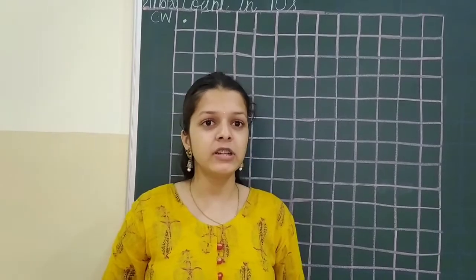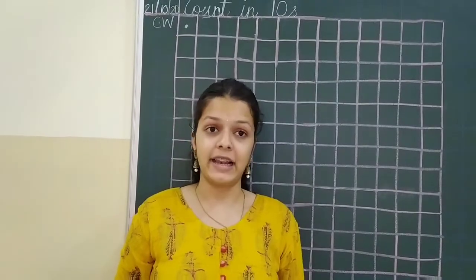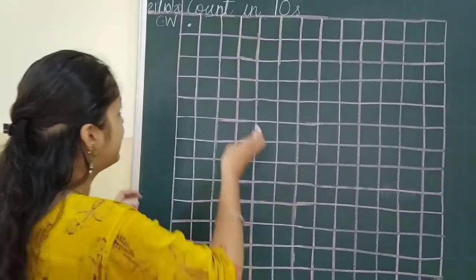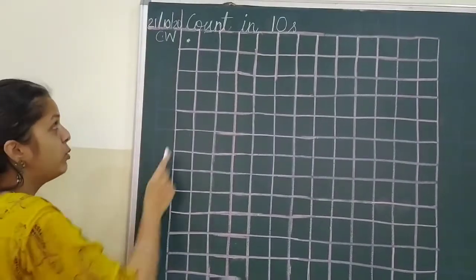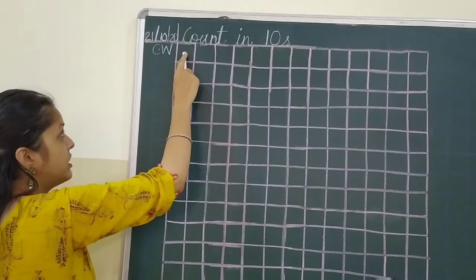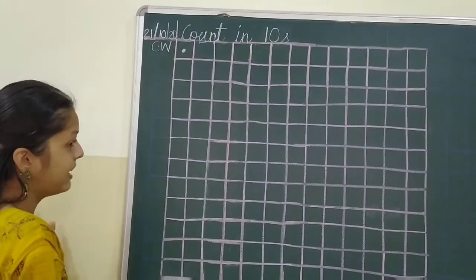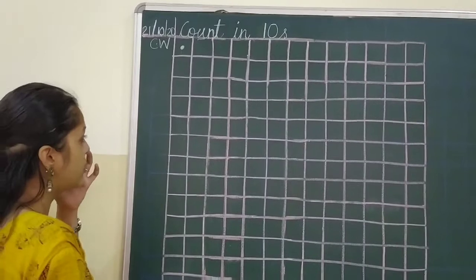Okay. So remove your M1 notebook of first term and let's start writing. Write the title count in tens. Today is written CW. And we will put a dot over here. Because at the end there is three digit numbers.